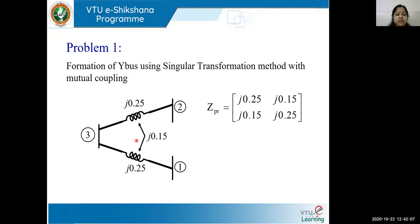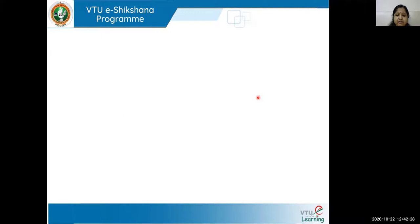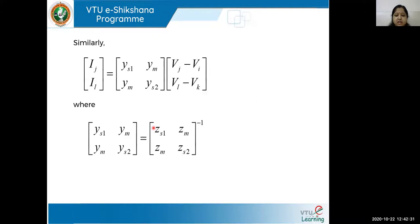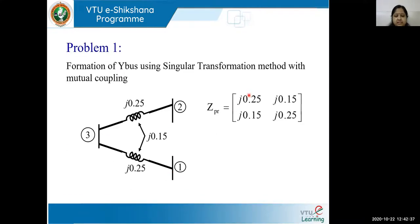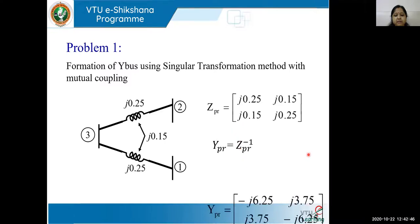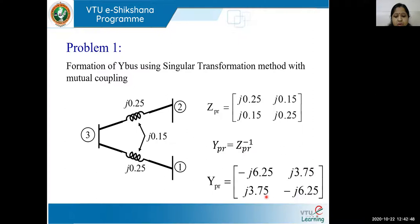If we did not consider mutual coupling, the off-diagonal elements would be zero. Since mutual coupling is present, the off-diagonal elements are Zm and Zm. So Zs1 and Zs2 are on the diagonal, and Zm appears at the off-diagonal positions — this is your Z primitive. Taking the inverse of this matrix gives you the Y primitive matrix.